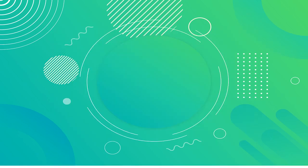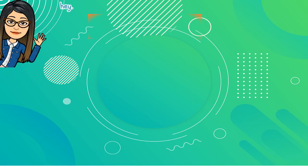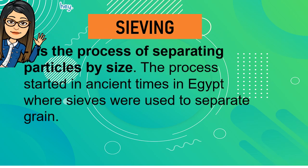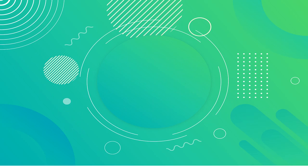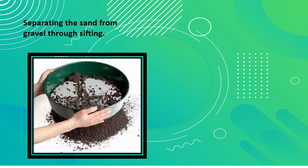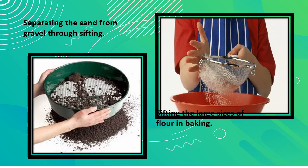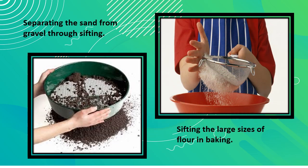The next way of separating a mixture is by means of sieving. Sieving is the process of separating particles by size. This process started in ancient times in Egypt where sieves were used to separate grain. Examples include separating sand from gravel through sifting, and separating large pieces from flour in baking by using a sifter.